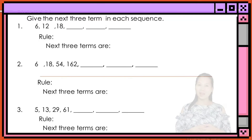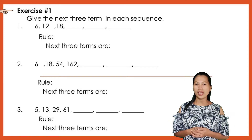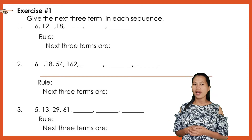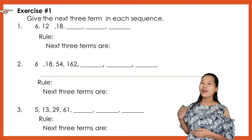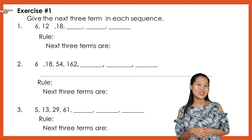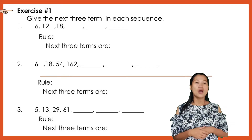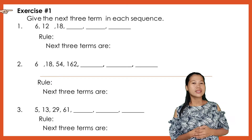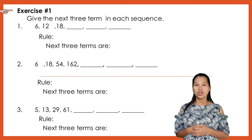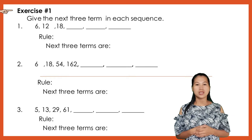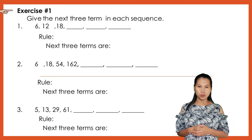Now, it's your turn to perform and formulate the rule in finding the next term. Write your answers on your notebook. For exercise 1, give the next 3 terms in each sequence. Write your answers on your notebook.